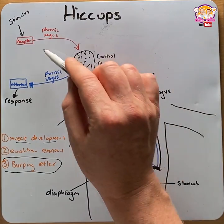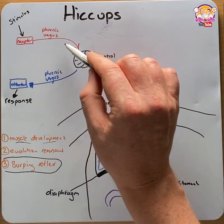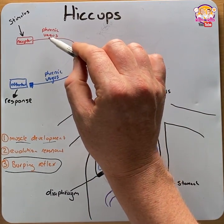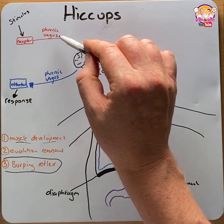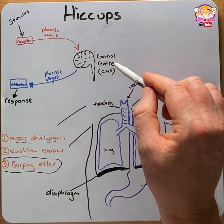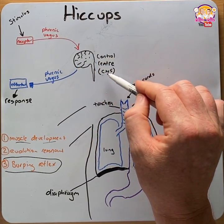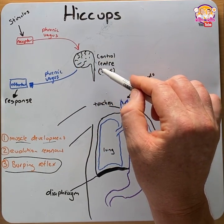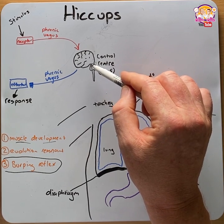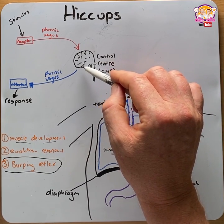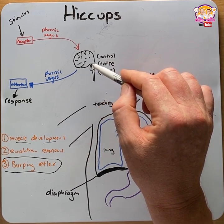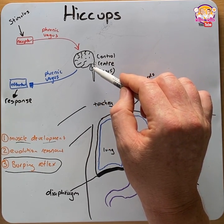This then sends sensory information via the phrenic nerve, the vagus nerve, and some sympathetic nerves to the control centre, which is located in the CNS. Specifically, the medulla, the hypothalamus, the reticular formation, and the phrenic nuclei.